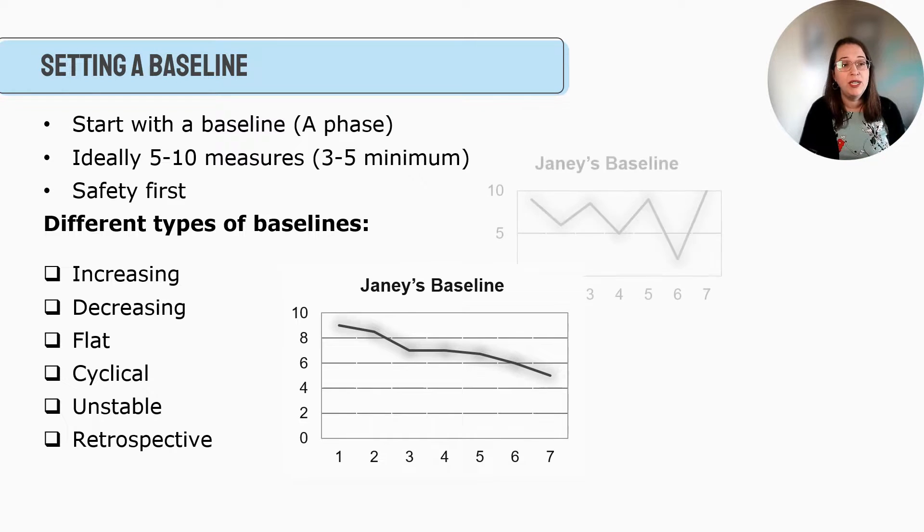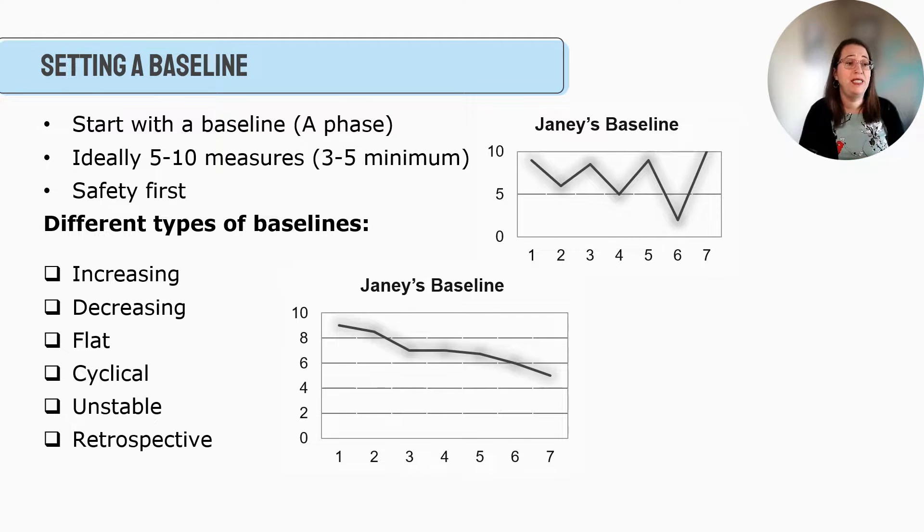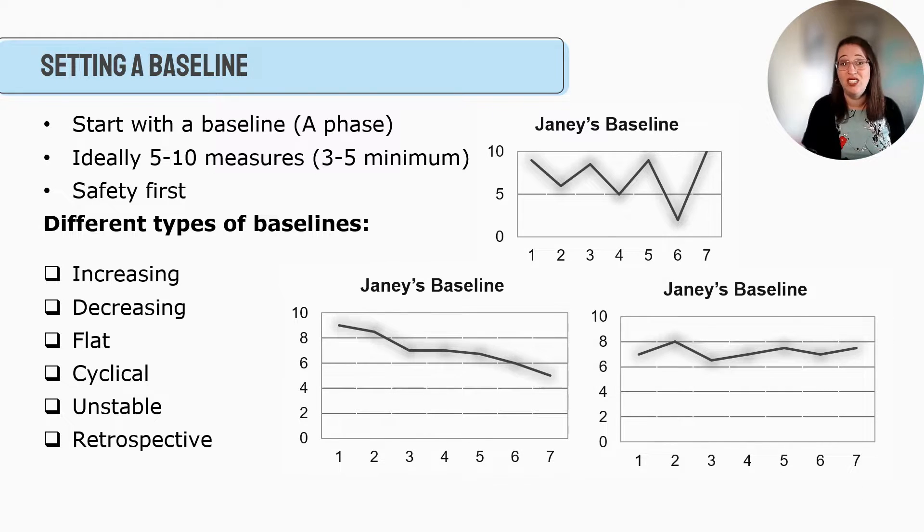So this is an example of like a decreasing baseline. And sometimes what you'll find is even without the intervention being implemented, people will still report changes in their baseline. Like I've mentioned, sometimes just saying I need help is enough for people to start feeling a little bit better. You might have a baseline that's unstable where they're reporting a different amount of the issue. You might have a kid who does really good on day one. On day two, he gets in two fights. On day three, zero fights. On day four, seven fights. So sometimes people's baseline is pretty unstable and that's super normal as well. Or you might get one that's just flat.